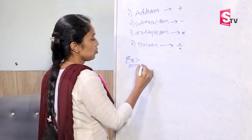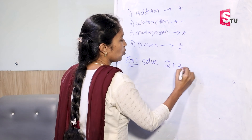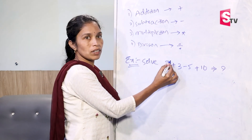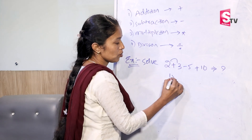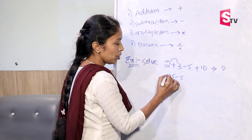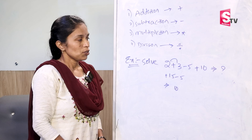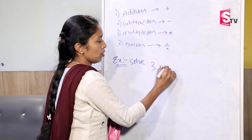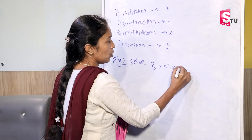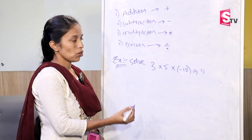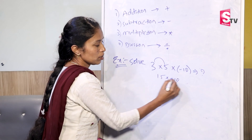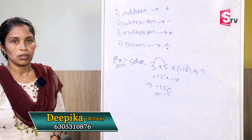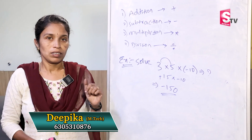For example, solve: 2 plus 3 minus 5 plus 10 equals how much? 2 plus 3 equals 5; 5 plus 10 equals 15; 15 minus 5 equals 10. The final answer is 10. For multiplication: 3 into 5 into minus 10 equals how much? 3 fives are 15, into minus 10. Plus into minus equals minus, so the answer is minus 150. This is how we do addition, multiplication, subtraction, and division.